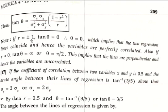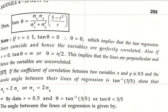Note: if r equals plus or minus 1, take r equals plus 1. Then 1 minus 1 squared equals 0, so tan theta equals 0. Therefore theta equals tan inverse of 0 equals 0, which implies the two regression lines coincide. Theta equals 0 means the two regression lines coincide, and hence the variables are perfectly correlated.